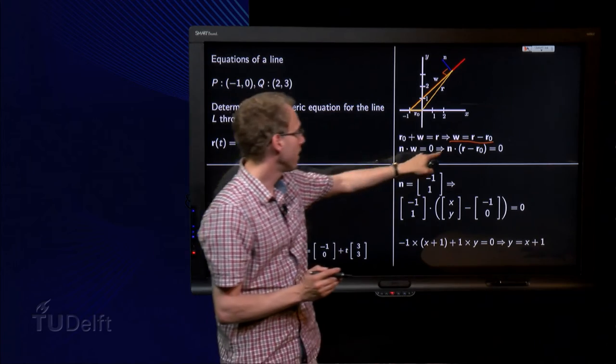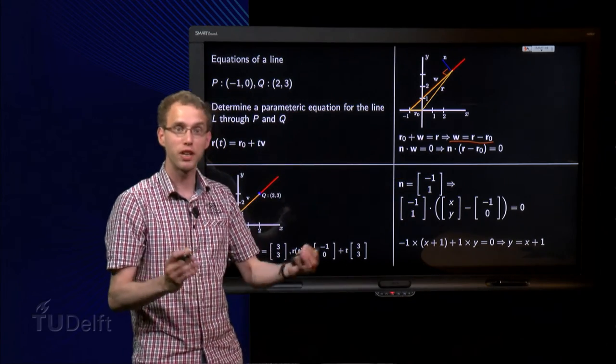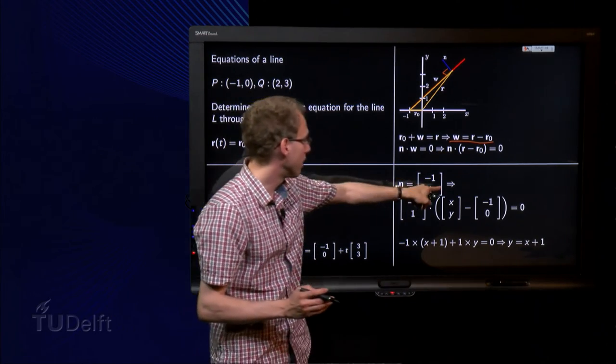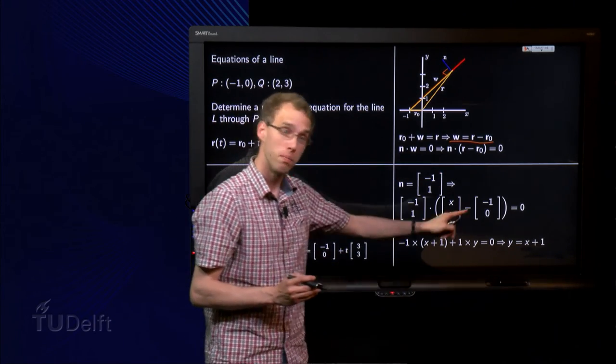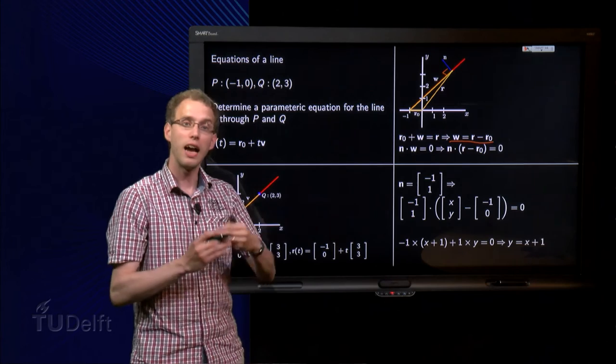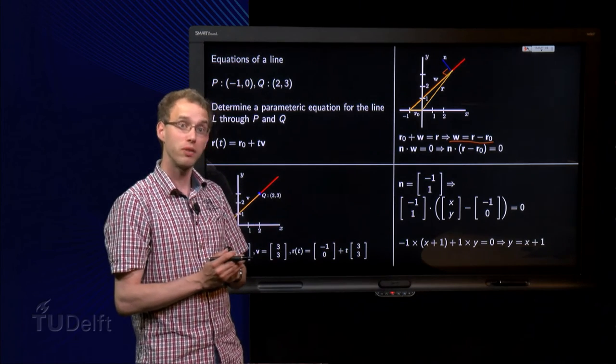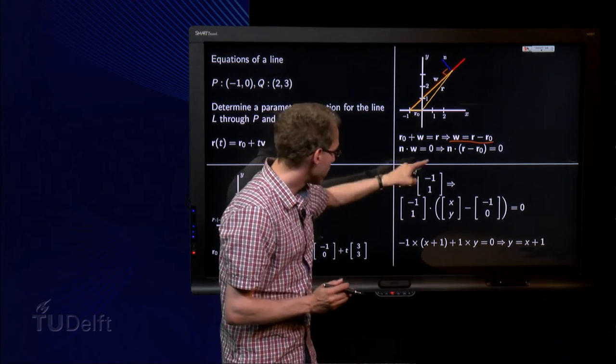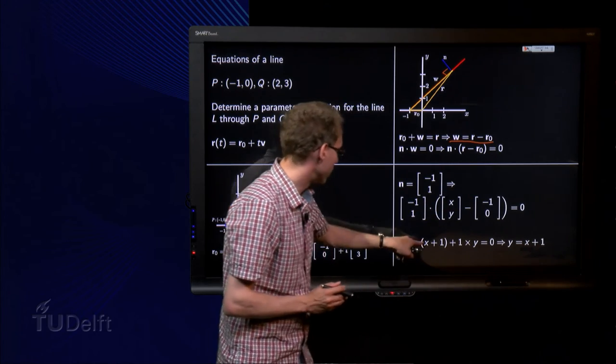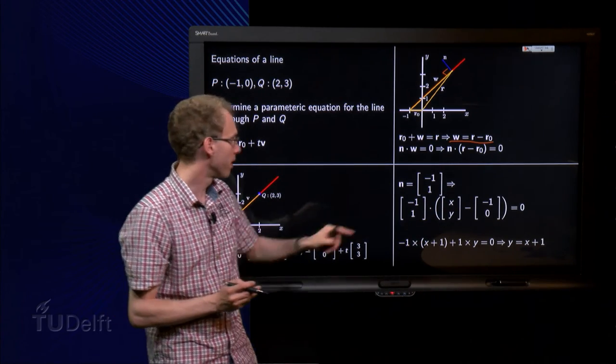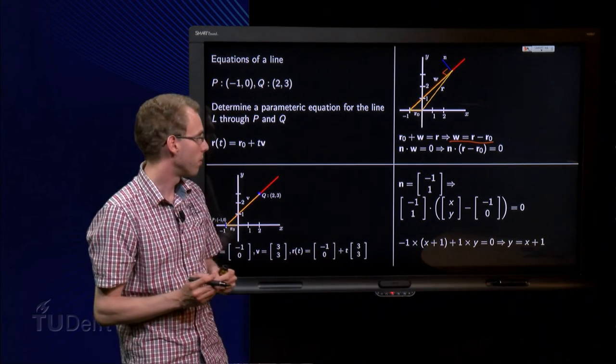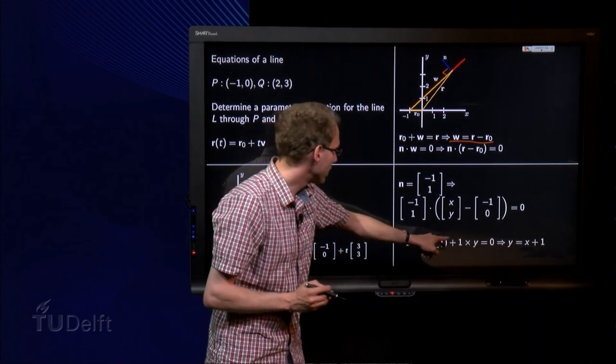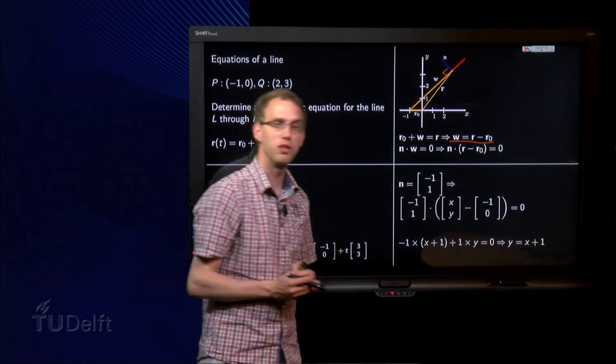And then we just fill everything in. r is an arbitrary point on the line, so that is denoted by x, y. And r0 is the same as before, minus 1, 0. And if you work out the inner product, what do we get? Well, you get minus 1 times x minus minus 1, so x plus 1. Plus 1 times y minus 0, so plus y. So what do we get? y equals x plus 1.